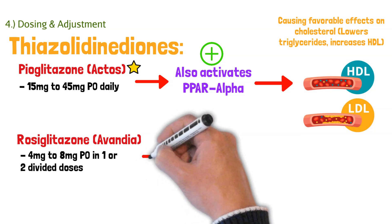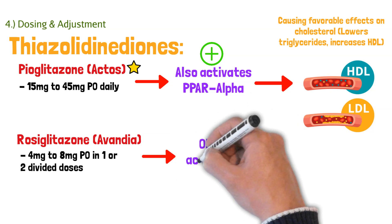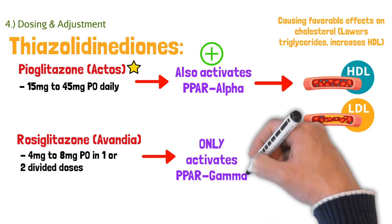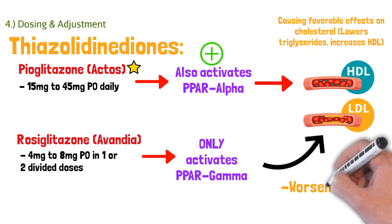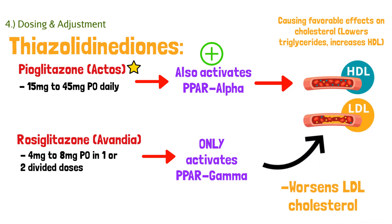Rosiglitazone, on the other hand, only activates PPAR-gamma, and because of that, it actually worsens your LDL cholesterol. Overall, it can increase LDL levels too much, where you may see some cardiovascular side effects.